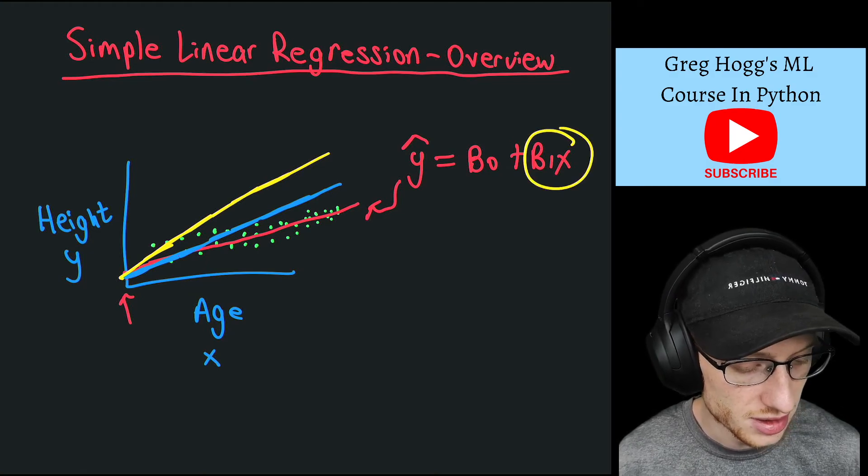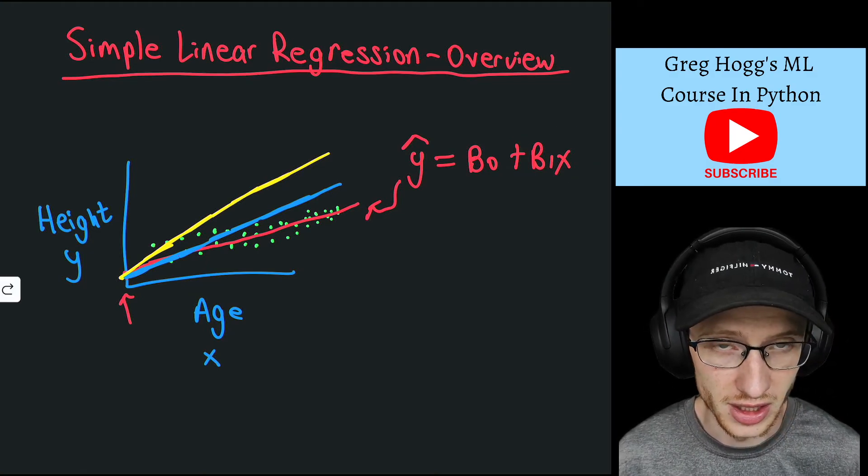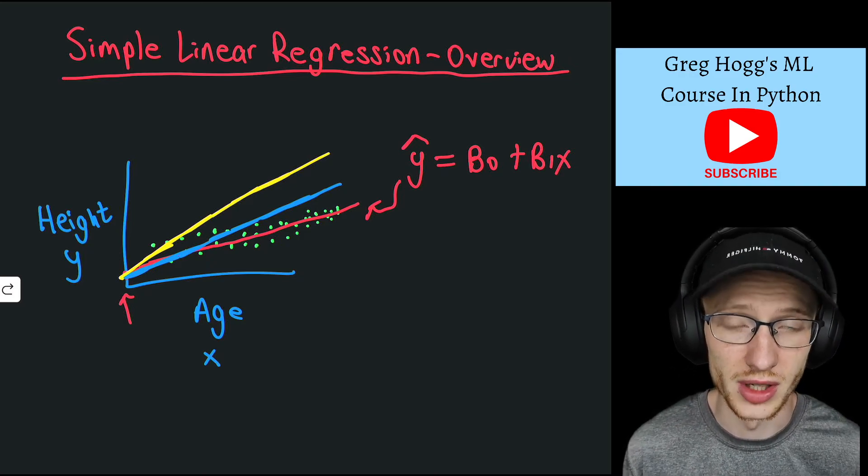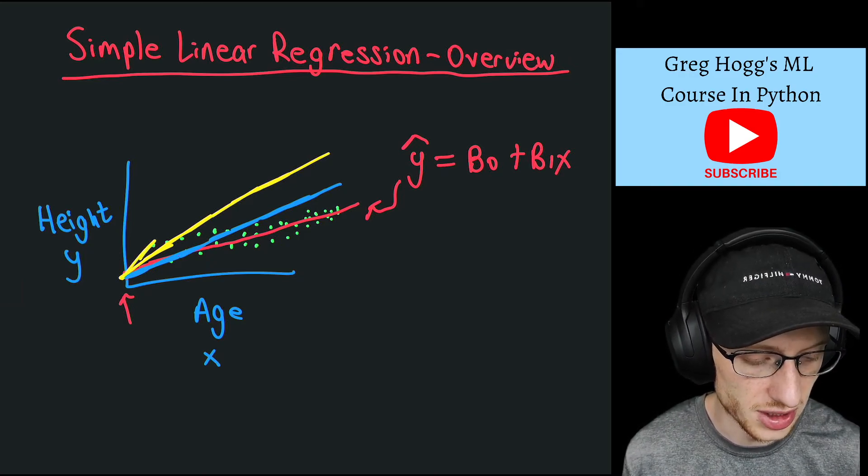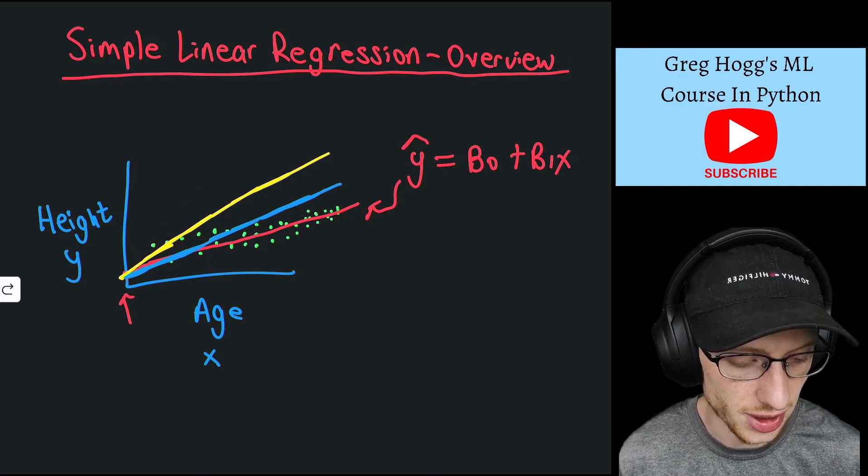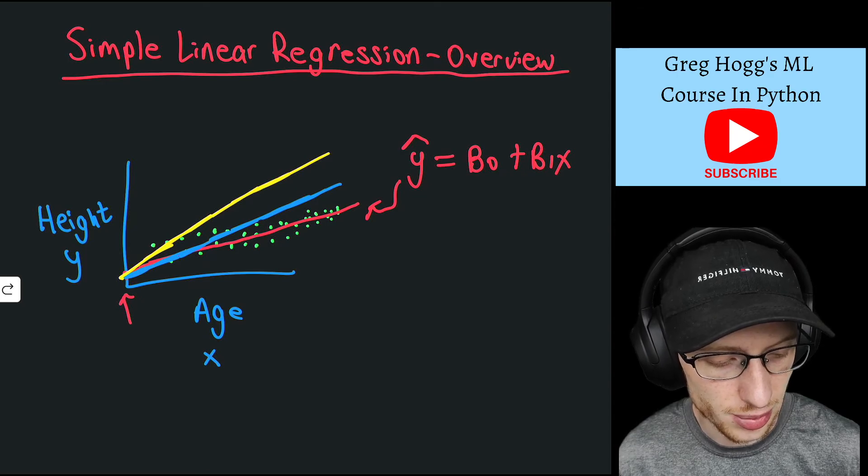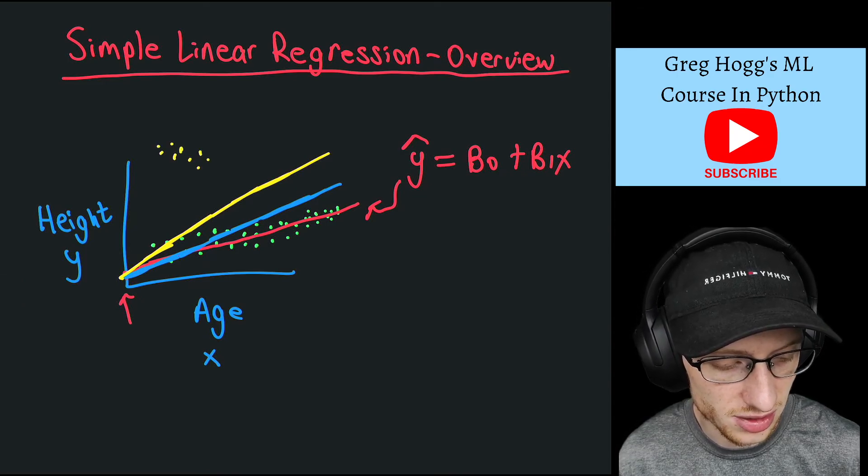And we're multiplying it by x because we have basically a linear thing here. As x increases, then, you know, so is y according to whatever beta 1 is. So that slope dictates the relationship there. All right, and there's no reason that it had to be positive here. It could have been data points like this, decreasing like that.